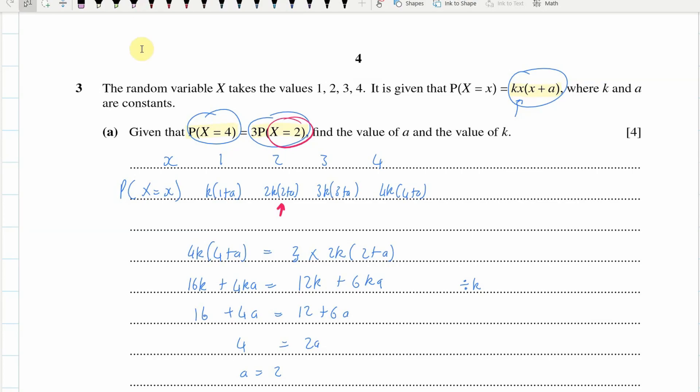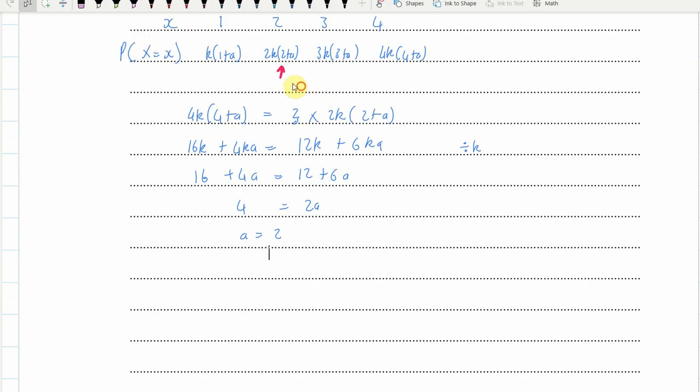And now to find out what k equals, we can rewrite these values here. So this would be, now we know what a is, this is 3k. And this one, 2 plus 2, 4 in the bracket, so 8k. And then this one will be 3 plus 2, 5, times 3 is 15k. And this would be 4 plus 2 is 6, times 4 is 24, so 24k. And we know that all of those probabilities have to add to 1, so 3k plus 8k plus 15k plus 24k equals 1. And now I'm getting 50k, so k is equal to 1/50th.